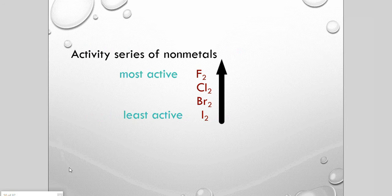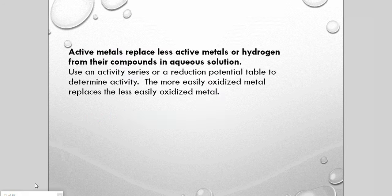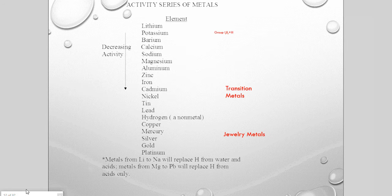The activity series for non-metals runs from most active fluorine to least active iodine. For metals, active metals replace less active metals or hydrogen from their compounds in aqueous solution. We use the activity series — and later in the year, reduction potential tables — to determine metal activity. The more easily oxidized metal replaces the less easily oxidized metal. The series groups: lithium to aluminum (Groups 1, 2, 3 — most active), zinc to lead (transition metals), then hydrogen, then the precious/jewelry metals at the bottom.